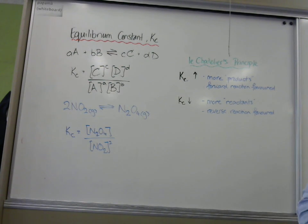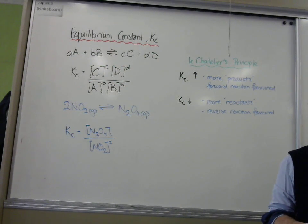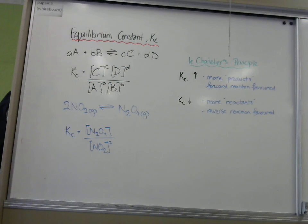And for your information, in the one that we were doing today, when it was really dark brown, it was probably a very, very little number, and when it was nearly colorless, it was a very, very big number. So it changes depending on how you set up the equilibrium.